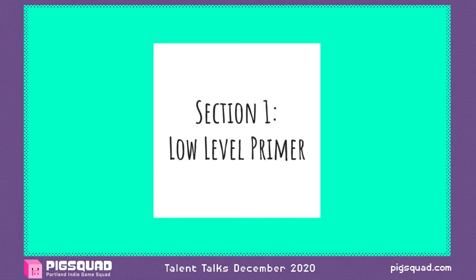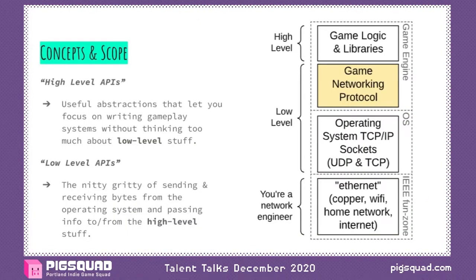Section one: a low-level primer. On the right we have a stack of concepts that all sort of depend on each other, top to bottom. At the very top we have what we could call the high-level APIs — this might be your game logic interacting with a networking library, or libraries that expect some kind of contract with a lower-level system inside of an existing game engine. Below that, low-level spans the operating system and maybe code you've written inside a game engine. Low-level is a vague term, but it means all the low-level bit-and-byte pushing.